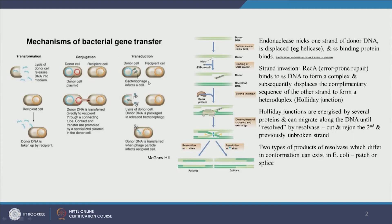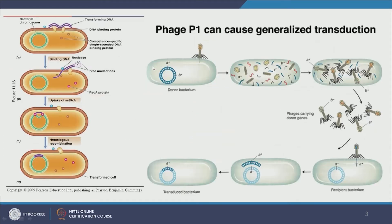Just to revise: last time I talked about transformation, conjugation, and transduction. Let us look at transformation and conjugation in detail. In transformation, we have DNA lying outside the cell. We have a DNA binding protein on the cell membrane which picks up and sticks the extracellular DNA to the microbial cell. Then a nuclease protein allows the extracellular DNA to enter in the form of a single strand inside the cell.